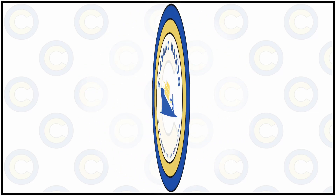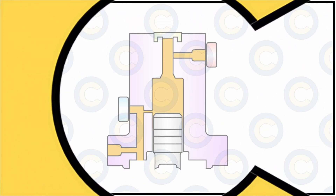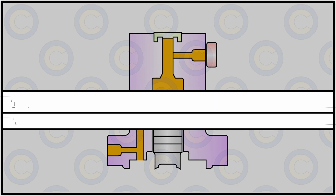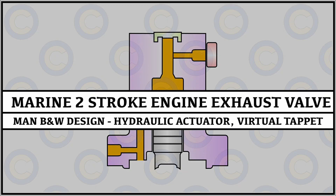Hello everyone and welcome to Ocean Cadence. In our video today, we will be explaining the function, working, and construction of a hydraulic pump or hydraulic actuator for a main engine exhaust valve of a two-stroke engine. We will explain how each component of the hydraulic pump works, how the cam profile assists in actuating the exhaust valve, and also the important role and understanding of virtual tappet on a two-stroke engine's exhaust valve.